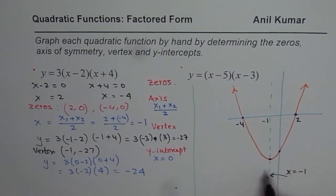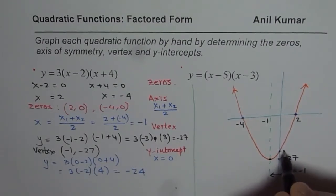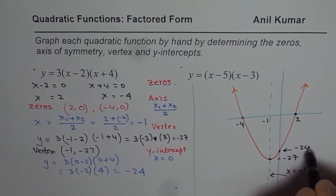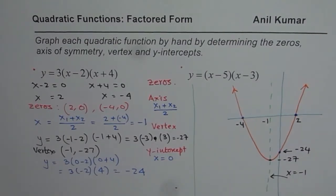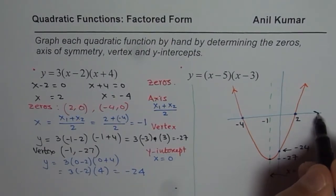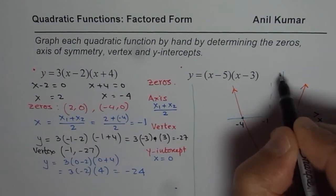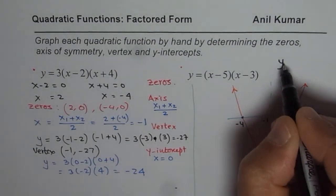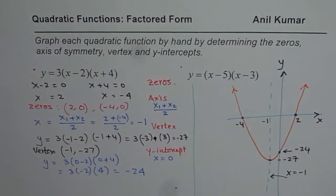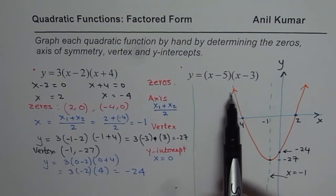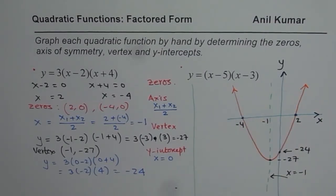Then you have the vertex - the y value is minus 27. The y-intercept is at minus 24. That is how you are going to sketch your parabola. You should write x, the independent variable, along the x-axis, and y, the dependent variable, along the y-axis.